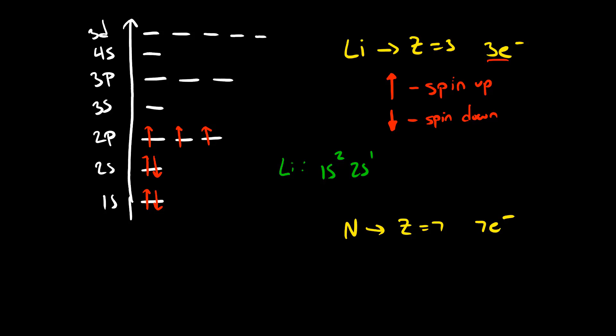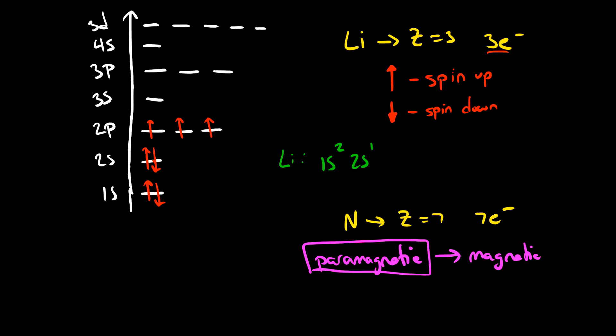The fact that nitrogen has at least one unpaired electron makes it paramagnetic. A paramagnetic element is one that has at least one unpaired electron. What this means is that it will be influenced by a magnetic field, so it will be drawn towards a magnet. It's magnetic. Nitrogen is paramagnetic because it has at least one unpaired electron. It actually has three.